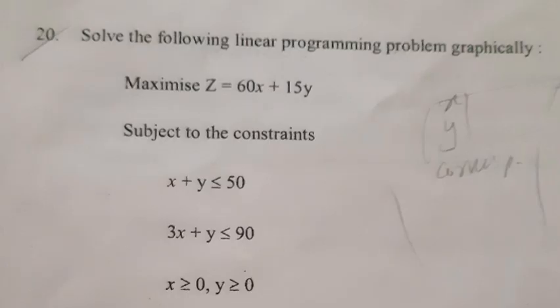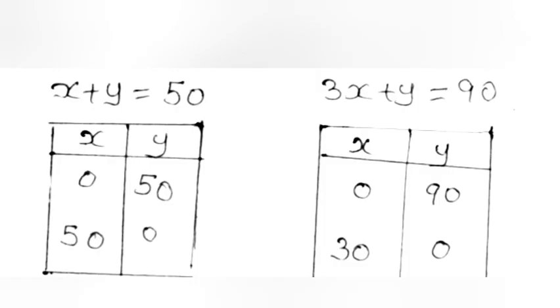Problem 20. Solve the following linear programming problem graphically. Maximize z = 16x + 15y subject to: x + y ≤ 50, 3x + y ≤ 90, x ≥ 0, y ≥ 0. Table for x + y = 50: (0,50) and (50,0). Table for 3x + y = 90: (0,90) and (30,0).